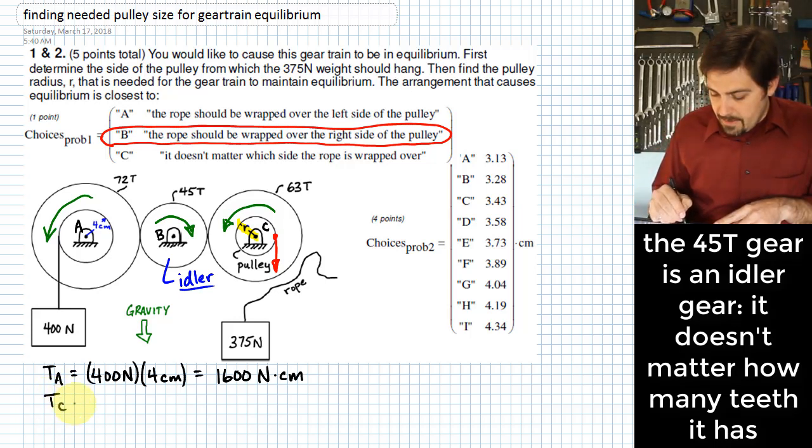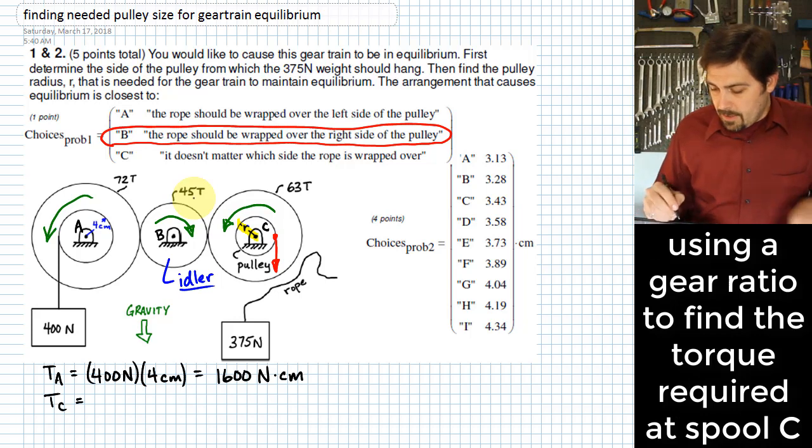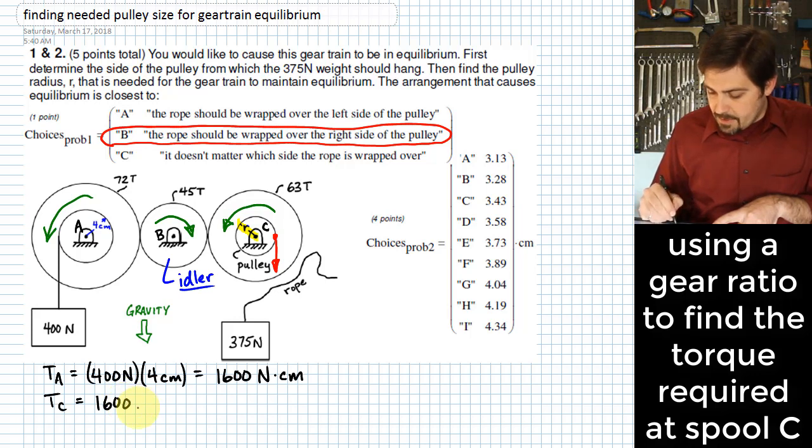What we can do to figure out the torque over at C, T sub C, is we can just completely ignore the 45 tooth gear and instead put on the torque that we have over at A, 1600 N·cm, and multiply by the ratio that gets us to what it is at C.